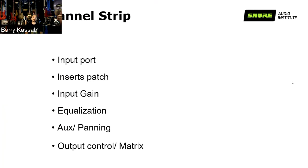Finally, on the channel strip we have the output control — the fader we push up and down. On top or next to it, you have your group channels, which is where you select your proper output matrix — which output group or output port is relevant to that input. This varies from mixer to mixer.